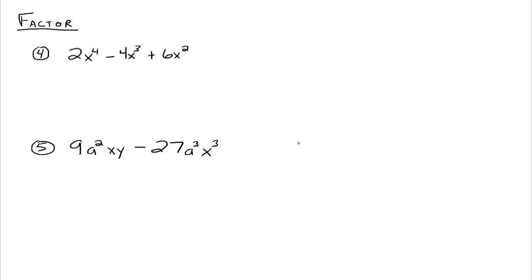Now we've got three terms. We want to look for the greatest common factor — what's common to all the terms? We can see we've got 2, 4, and 6, so 2 is common to all of those. Now, what about the variables? All the terms have variable parts. They all have x's: x to the 4th, x cubed, and x squared. If the same variable is everywhere, then the one we can factor out is the one with the smallest exponent.